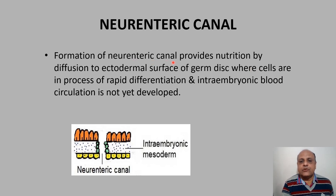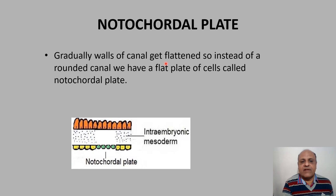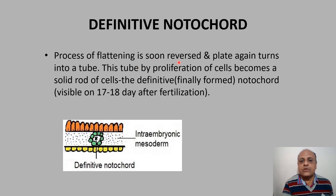Formation of the neuroenteric canal provides nutrition by diffusion to the ectodermal surface of the germ disc, because the yolk sac carries nutrients to this region where cells are undergoing rapid differentiation and intra-embryonic blood circulation has not yet developed. Gradually the walls of the canal get flattened to form the notochordal plate. This flattening is then reversed and the plate turns back into a tube, which by proliferation of cells forms a solid rod called the definitive notochord, formed by day 17 to 18 after fertilization.